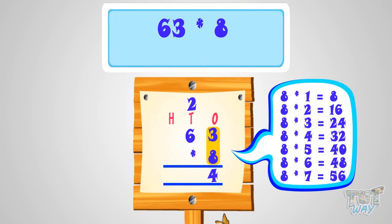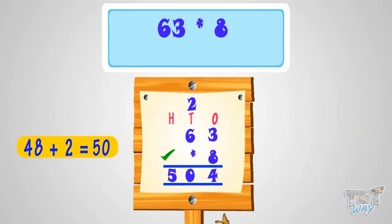Now, multiply 8 with 6. Multiplying 8 with 6, we get 48. And we have 2 to carry. So, add it to 48. 48 plus 2 equals 50. So, write 50 in the answer or the product. So, 504 is the answer or it is the product of 63 and 8.